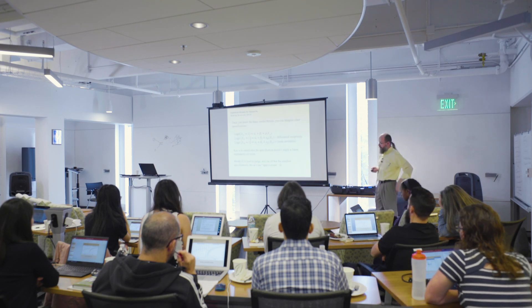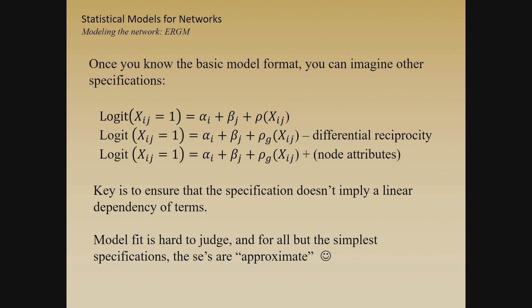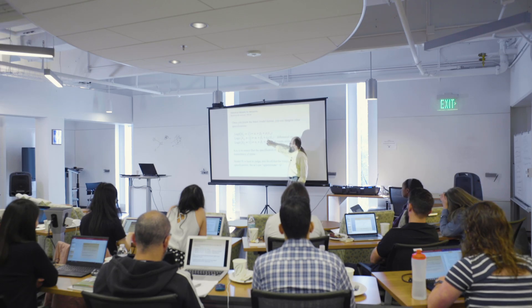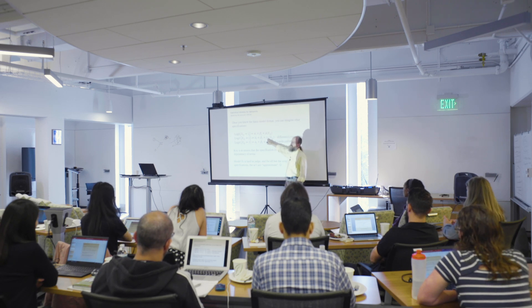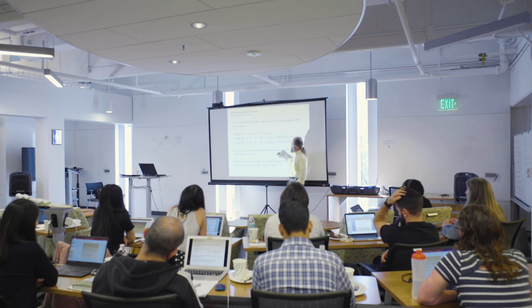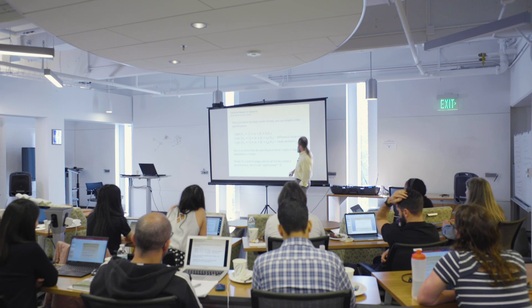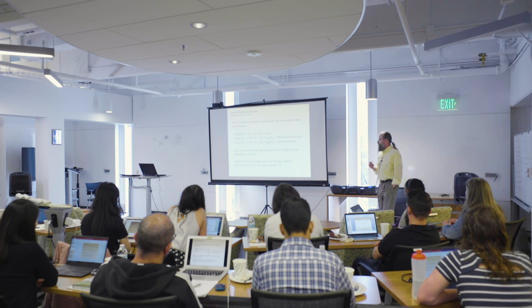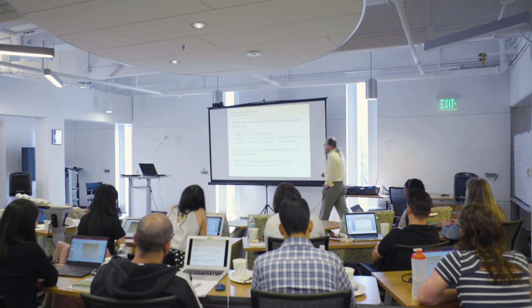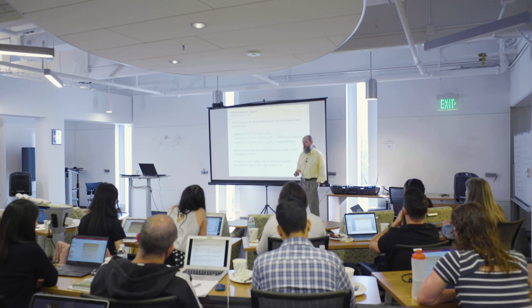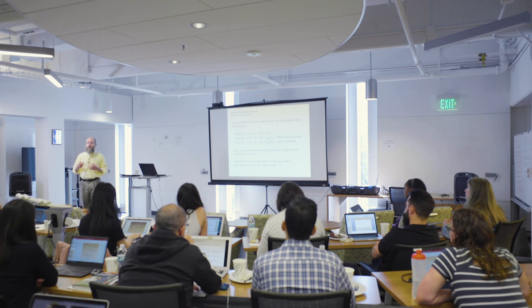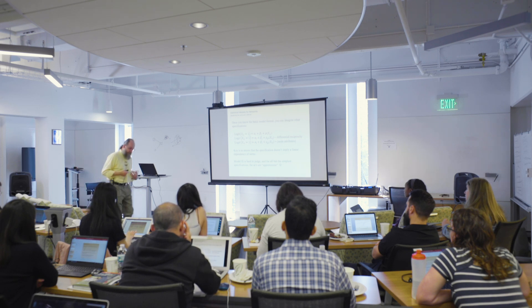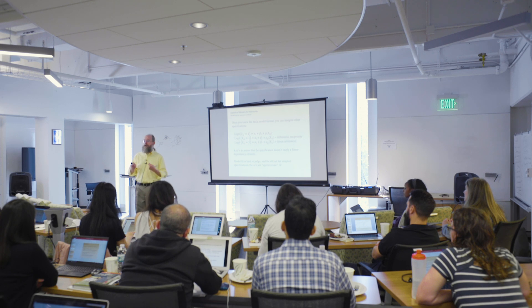You might add reciprocity that varies by groups — males and females have different levels of reciprocity — giving one parameter within groups and another between groups. You might add node attributes like wealth. The key is ensuring the specification doesn't imply linear dependencies. Mean out-degree must equal mean in-degree since it's a crosstab, so you lose a degree of freedom each time you add terms. If you were to run this on Add Health Wave 1 schools, over half the schools would drop out because students were limited to out-degree one to eight — no degrees of freedom left.